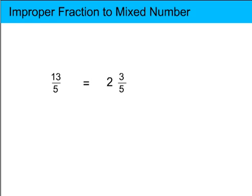You already know that the same value can be represented as either an improper fraction or a mixed number, that there are equivalent values. So 13 fifths is equivalent to 2 and 3 fifths.